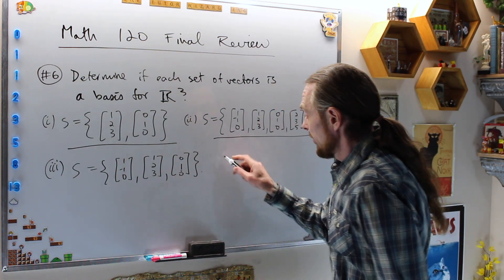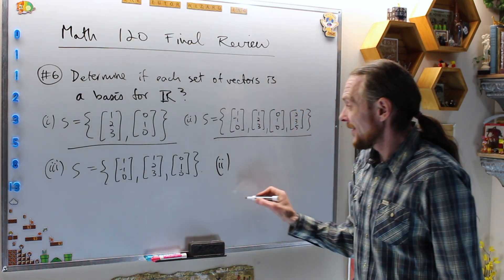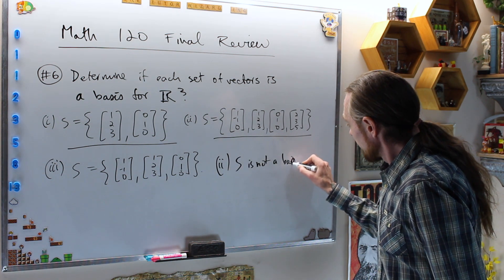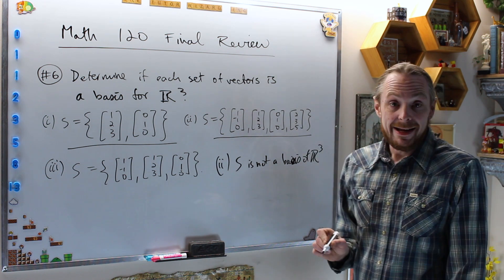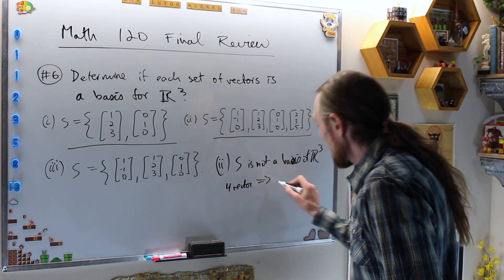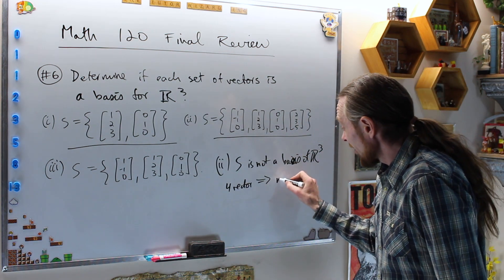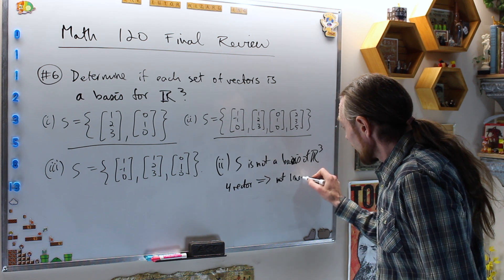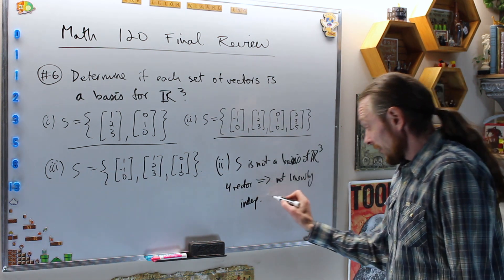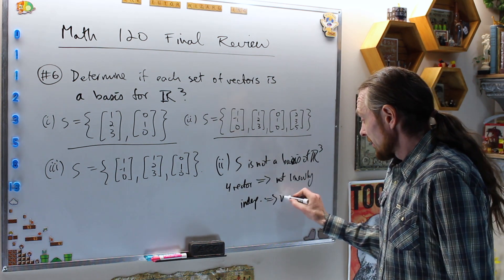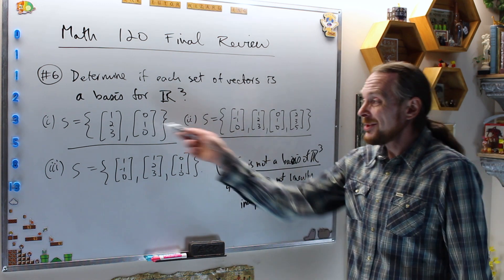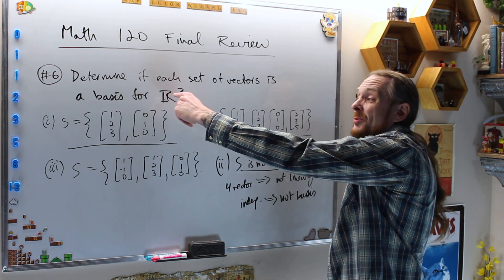For case two, all we have to say is S is not a basis of R³. Why? There are four vectors, and if given four vectors in three-space they are not linearly independent — they are linearly dependent — and therefore not a basis.